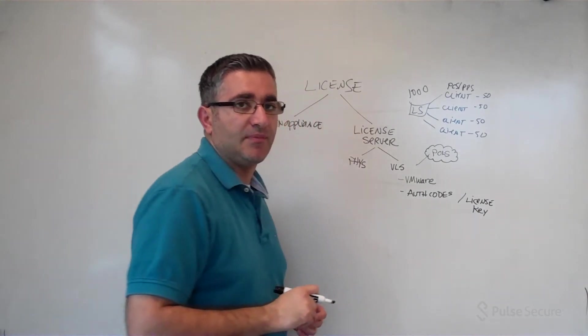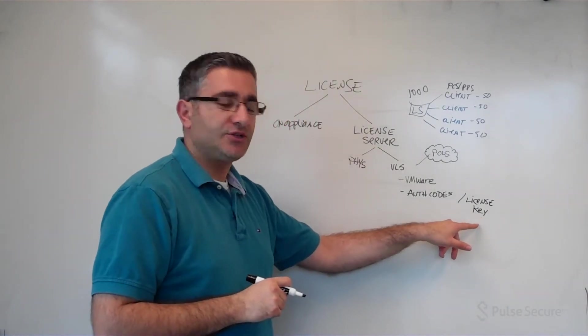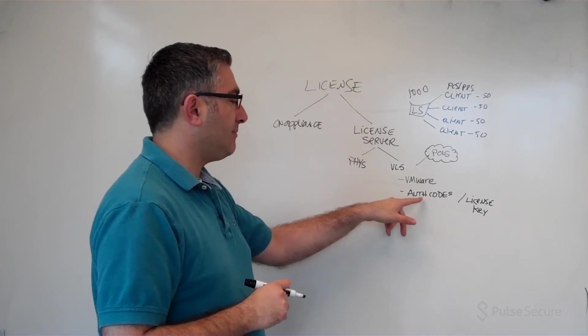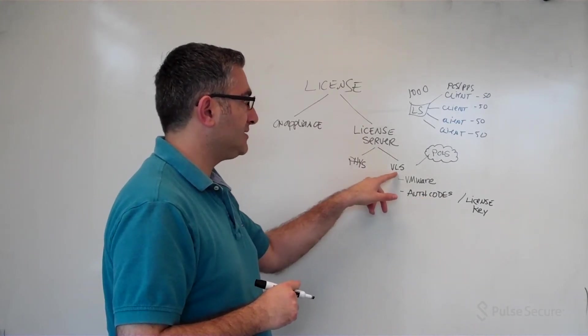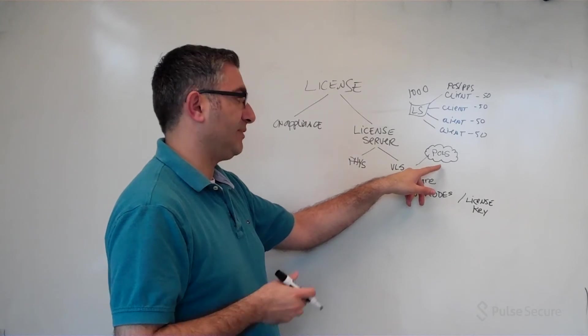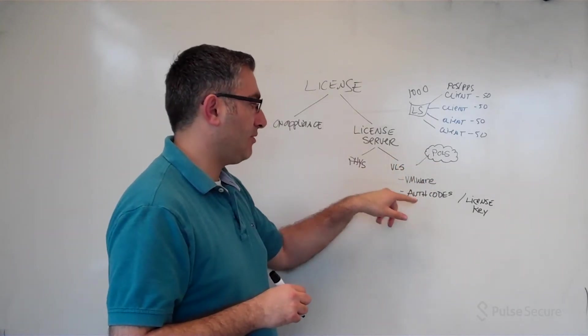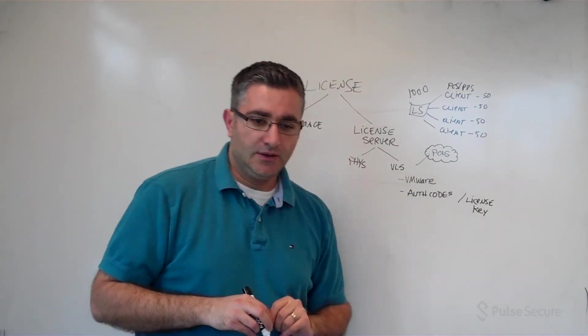So you can either go license key or auth codes. Auth codes really save you the step because these license keys are actually generated based on auth codes. Using auth codes is an automated way for the VLS to go talk to PCLS or Pickles and say, okay, your auth code is valid. Now here are all your licenses that you can push out to clients.